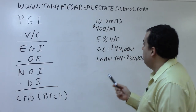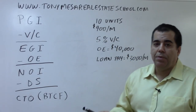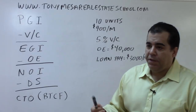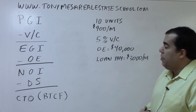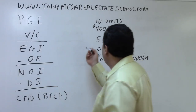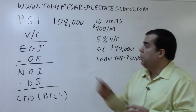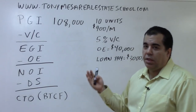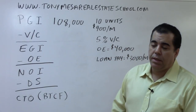Let's say you have 10 units and each one rents for $900 a month — it could be 10 apartments, a commercial space with 10 units, or warehouse bays in an industrial complex. Ten units times $900 is $9,000 a month. Multiply by 12 and that gives you $108,000. Whenever you use this formula, you always annualize the numbers — make them yearly. So $108,000 is your Potential Gross Income.